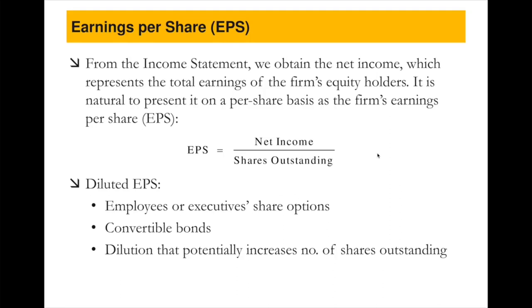We briefly described what EPS is. From the income statement, net income represents the total earnings of the firm's equity holders. To compare between different companies of different sizes — some may have $10 million net income, others $110 million — one simple way is to standardise by shares outstanding using net income divided by shares outstanding, which is EPS. There's a related concept called diluted EPS; we won't cover too much about convertible bonds in this unit, but I'm happy to explain on the discussion forum.